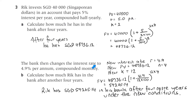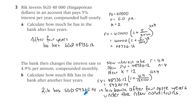The bank then changes the interest rate to 4.9% per annum, compounded monthly, so now K is 12. Calculate how much Rick has in the bank after another 4 years. The new interest rate is 4.9, the new present value is $48,736.12 from the previous answer, N is 4, and K is 12. We get $59,265.14 Singaporean dollars.